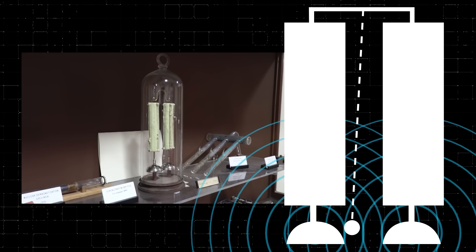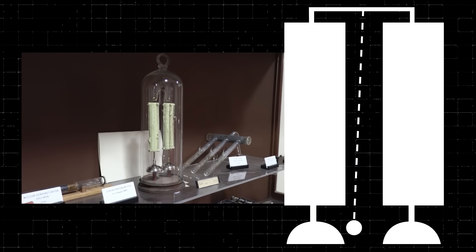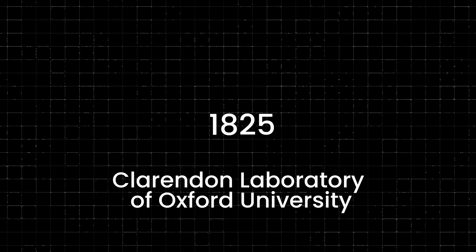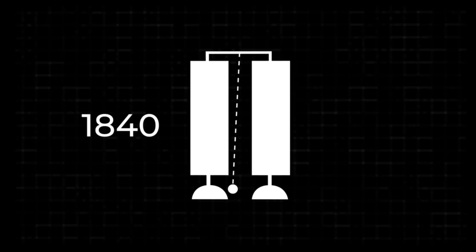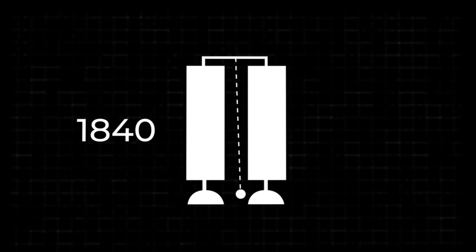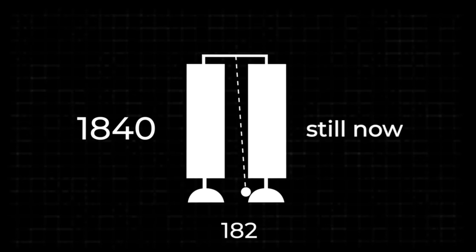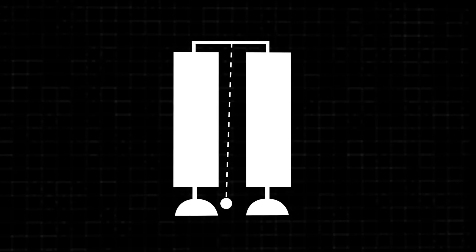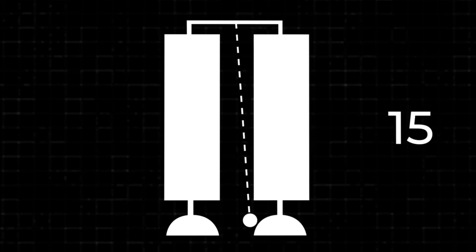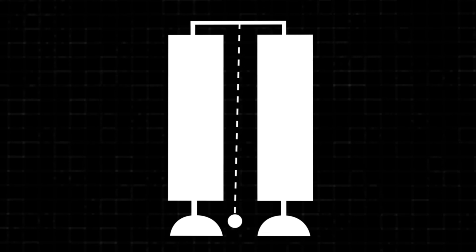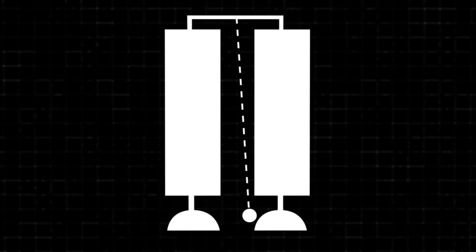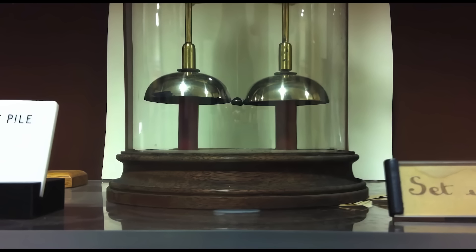It was invented sometime around 1825 by London instrument makers Watkin and Hill. But here's the mind-blowing thing about this invention: it was first displayed in 1840 and the bell has been ringing ever since. That's 182 years to date. Some say that it could have started ringing the minute it was constructed 15 or so years earlier, and some estimates state that the bell has rung over 10 billion times, and it's still ringing today.